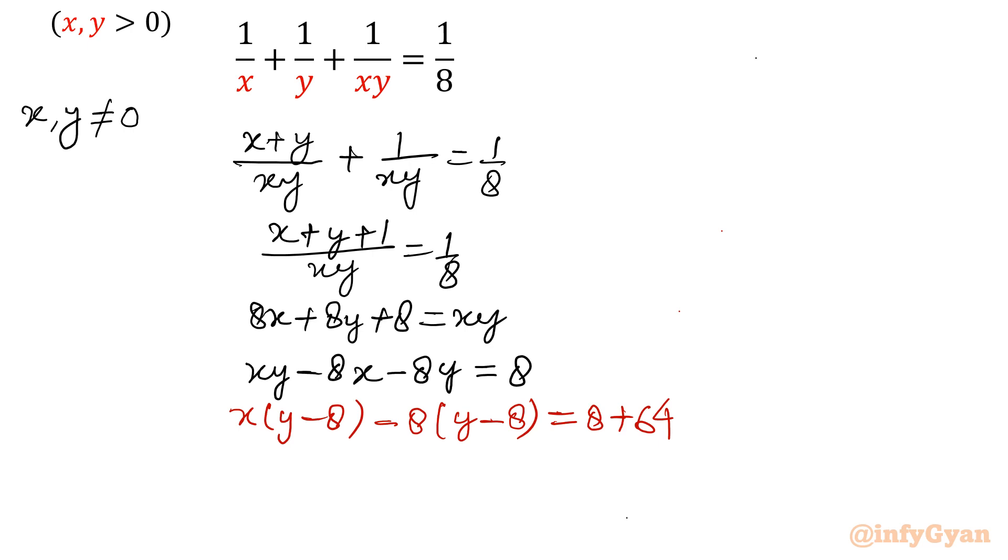x(y-8) - 8(y-8). So -8 times -8 becomes 64. So I added to left hand side 64 extra, so I need to add 64 to the right hand side also. So this way we will take (y-8) common out. In bracket there would be (x-8) and that is equal to 72.